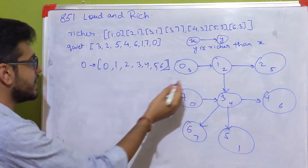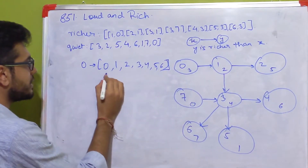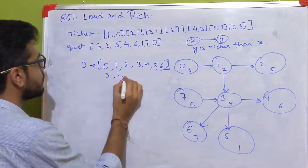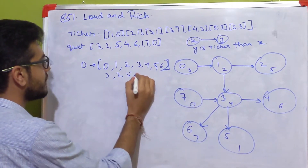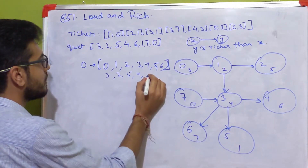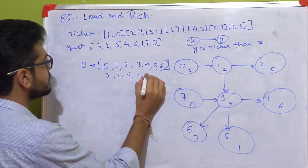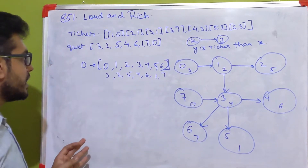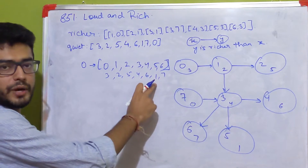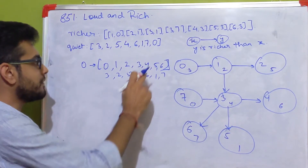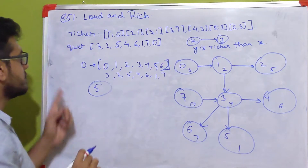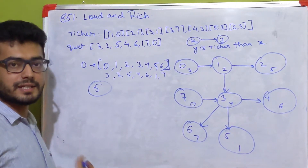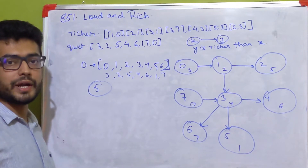Let's find the quietness values for this set: 0 has quietness 3, 1 has 2, 2 has 5, 3 has 4, 4 has 6, 5 has 1, and 6 has 7. Out of these values, 1 is the minimum quietness value which belongs to person 5. So 5 becomes the answer for 0 — that is, 5 is the person who is at least as rich as 0 and has the minimum quietness value.